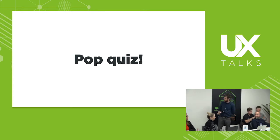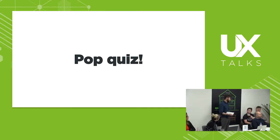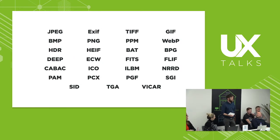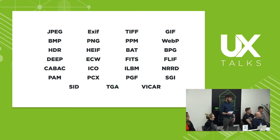JPEG. BMP. PNG. TIFF. Vicker is one — thank you, Derek. These are most of the file types you would see with bitmap images, my favourites being Fliff, Pam, Sid, and indeed Vicker.